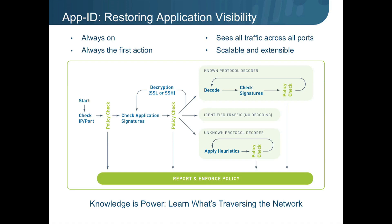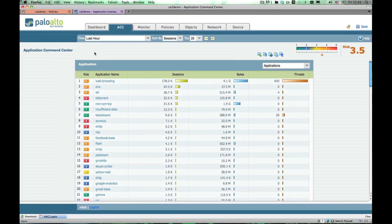There's an old adage that says knowledge is power, and in this case, knowing the identity of the applications on the network is a pretty powerful tool in the battle to maintain a secure network. Now let's take a look at App ID in action. The results of App ID traffic classification are displayed in Application Command Center, or ACC.